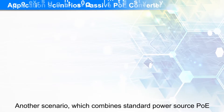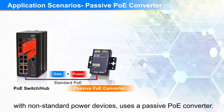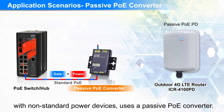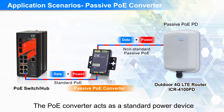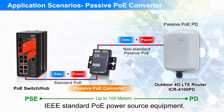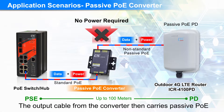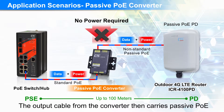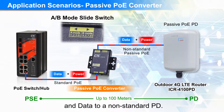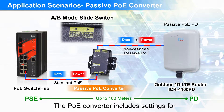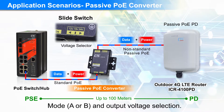Another scenario which combines standard power source PoE with non-standard power devices uses a passive PoE converter. The PoE converter acts as a standard power device and will negotiate with any IEEE standard PoE power source equipment. The output cable from the converter then carries passive PoE and data to a non-standard PD. The PoE converter includes settings for mode setting, A or B, and output voltage selection.